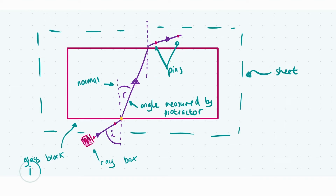The dotted line in the background is the piece of paper or sheet which the glass block is placed on. The glass block itself is outlined in a plum colour, and we have a small ray box at the bottom which has a ray passing out of it. It goes into the glass block, refracts, then comes out the other side. I've also marked in the angles — angle I beside the ray box is our angle of incidence and angle R on the other side is our angle of refraction. Several pins are marked in as well, used to trace out the beam so we can later use a protractor to measure the angles.